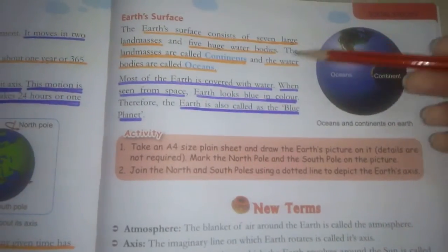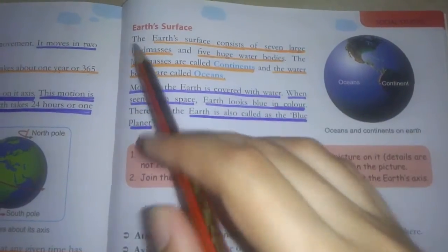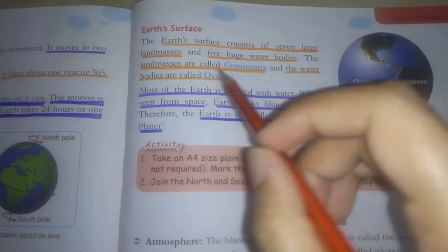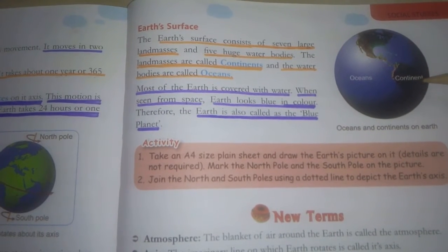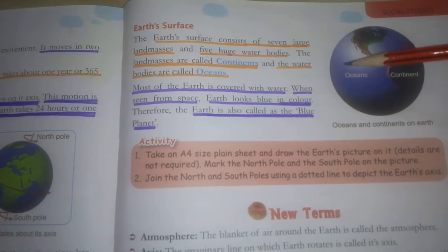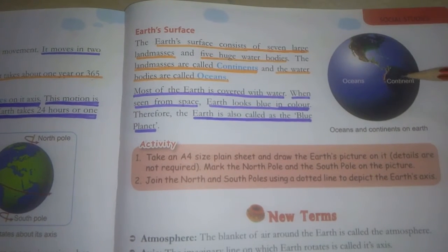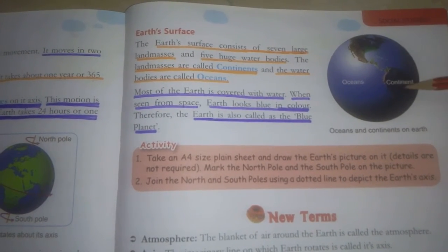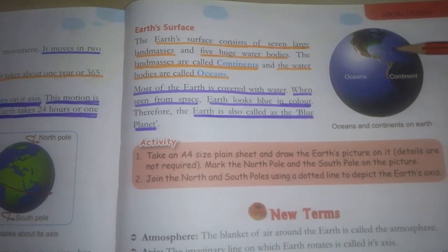Now come to page number 181. Our last topic is earth's surface. The earth's surface consists of seven large land masses and five huge water bodies. Our earth's surface is made up of seven land masses and five huge water bodies. The land masses are called continents. And the water bodies, see here in blue color.